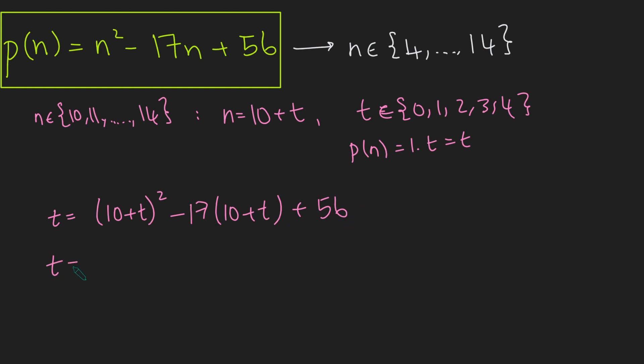Now we just have to do a bit of expanding and simplifying. This becomes 100 plus 20t plus t squared minus 170 minus 17t plus 56. Bringing this all onto the right-hand side, we get t squared. We've got 20t minus 17t, that's 3t minus another t, that's 2t. And then the constant, we get 100 minus 170, that's minus 70 plus 56, that's minus 14 equals 0. So we've got t squared plus 2t minus 14 equals 0.